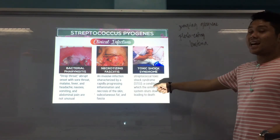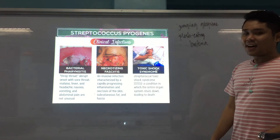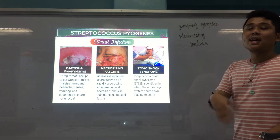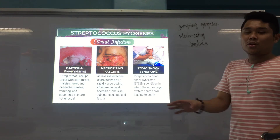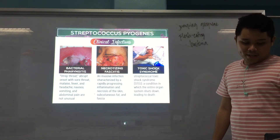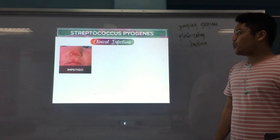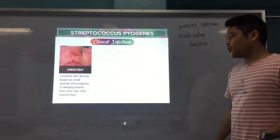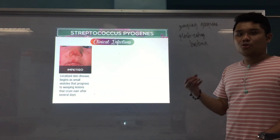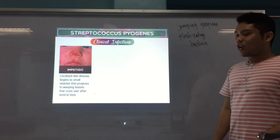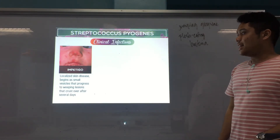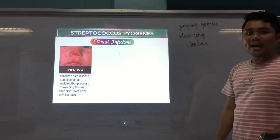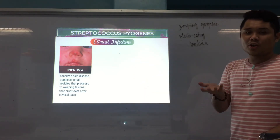Toxic shock syndrome (STSS) occurs when the exotoxins and virulence factors of Strep pyogenes cause entire organ system shutdown leading to death. Another infection is impetigo — small vesicles that progress to weeping lesions over several days. Impetigo is not caused exclusively by Strep pyogenes; Staphylococcus aureus and other bacteria can also cause it.